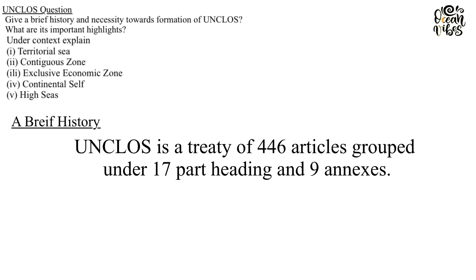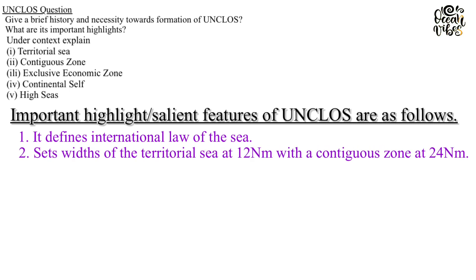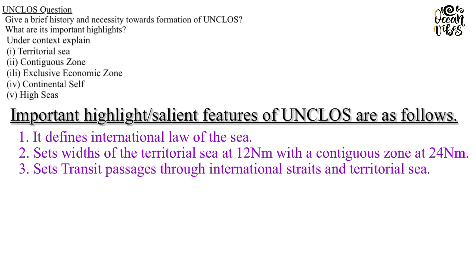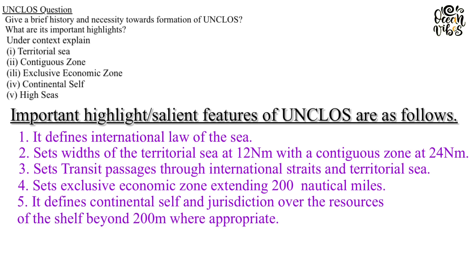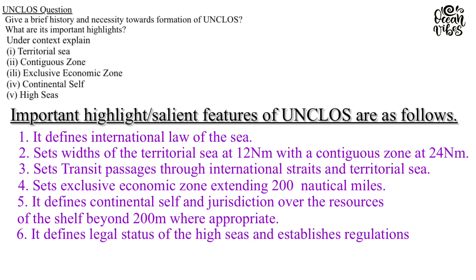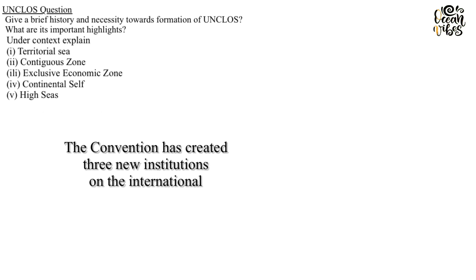UNCLOS is a treaty of 446 articles grouped under 17 part headings and nine annexes. Its important salient features are as follows: it defines international law of the sea; sets the width of the territorial sea at 12 nautical miles with a contiguous zone at 24 nautical miles; sets transit passages through international straits and territorial sea; sets the exclusive economic zone extending 200 nautical miles; defines continental shelf and jurisdiction over resources beyond 200 miles where appropriate; defines the legal status of the high seas; establishes regulations for control of marine pollution; and allows disputes to be settled in the International Court of Justice.